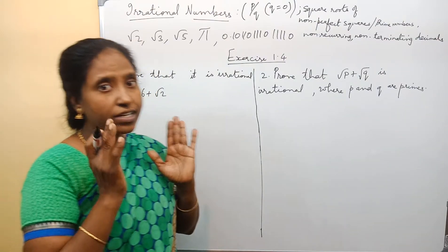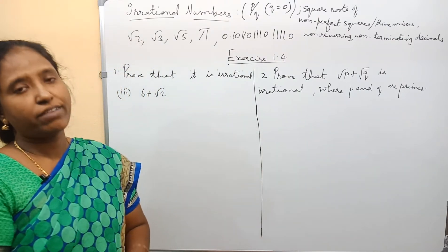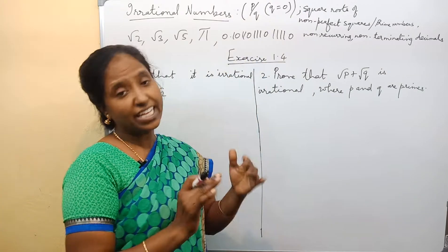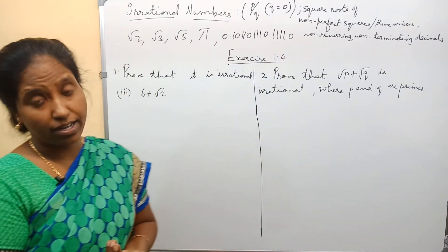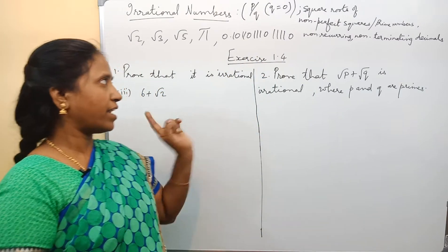The denominator should not be 0. If it is 0, then it is an irrational number — it is an illogical number.